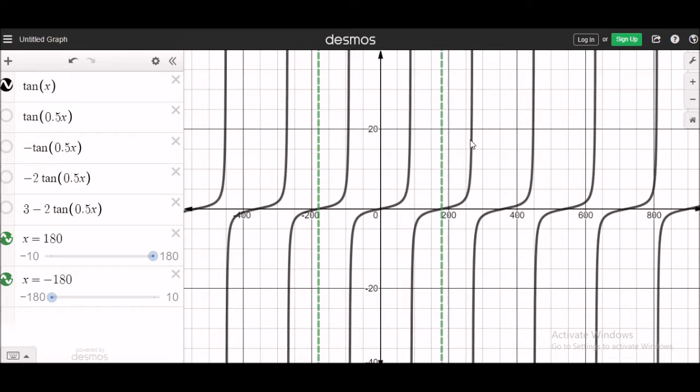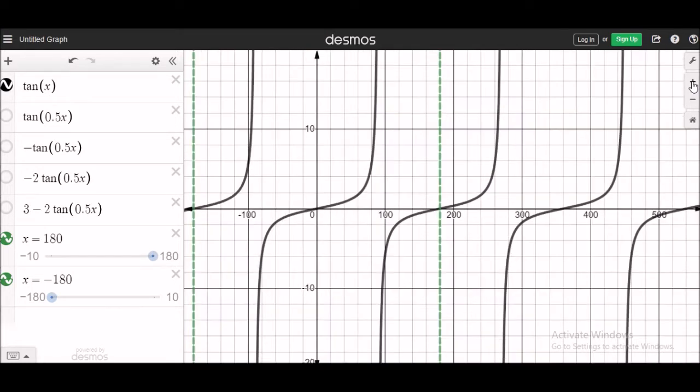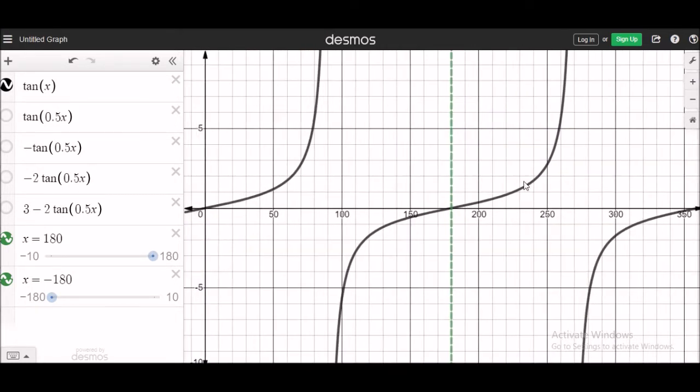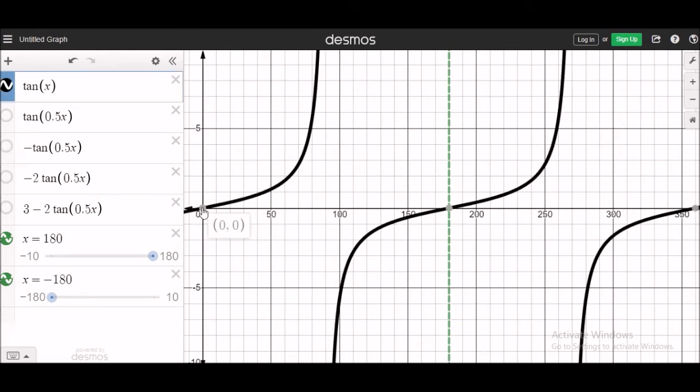So how does tangent x look like? Let's limit this to 0 to 360. So my 0 is here and my 360 here. And you know this is one complete tangent x.